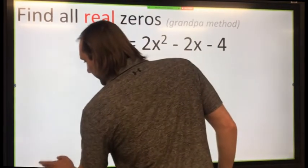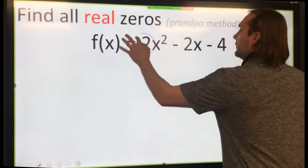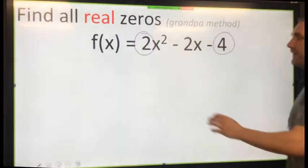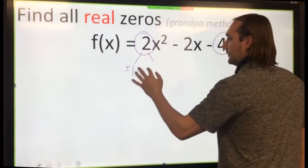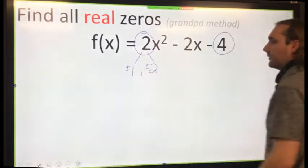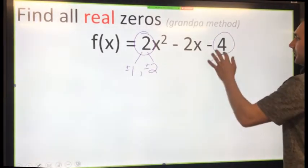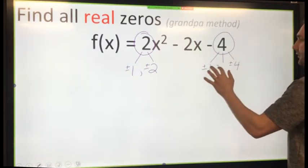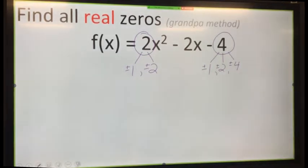Now let me find all of my potential zeros. Look at the coefficients 2 and 4 and start off by finding my multiples of 2, which is 1 times 2. So plus or minus 1 and plus or minus 2. Now let me find my multiples of 4, which is 1 times 4 and 2 times 2. So my multiples of 4 are plus or minus 1, plus or minus 2, and plus or minus 4.